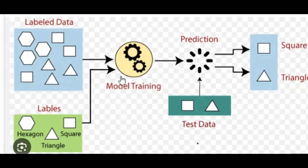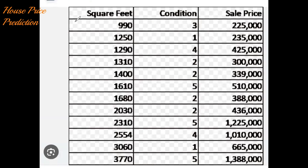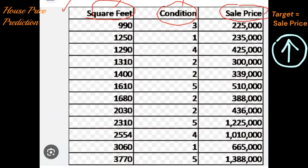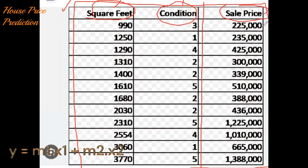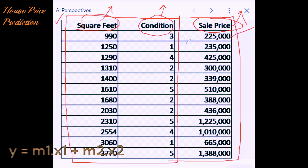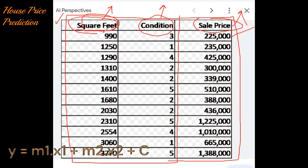Looking at a data example for supervised learning: you have two input features — square feet and condition of the house — based on which you are predicting a target, the sale price. You have historical data where, based on a certain combination of these inputs, you know the corresponding price. When the model is learning, it is trying to learn an equation — think of it as y equals m times x plus c, where x is square feet, and m is a constant representing how much x contributes to predicting y. With two features x1 and x2, the equation becomes y equals some combination of x1 and x2.